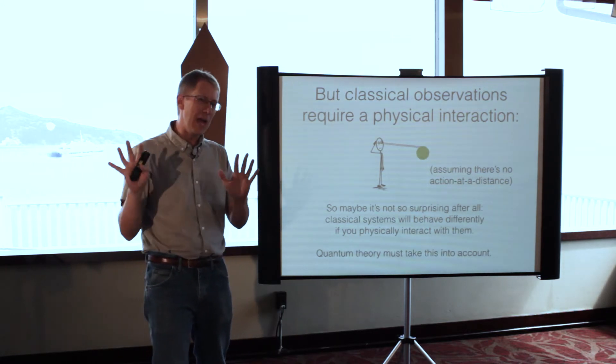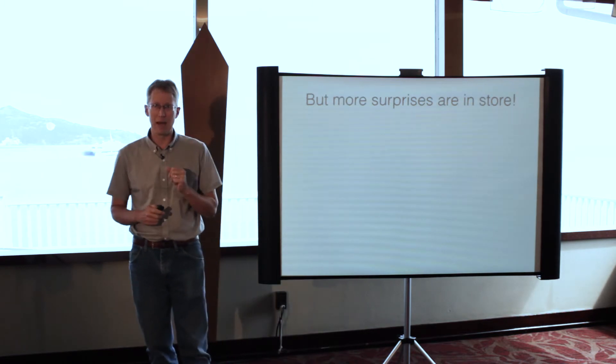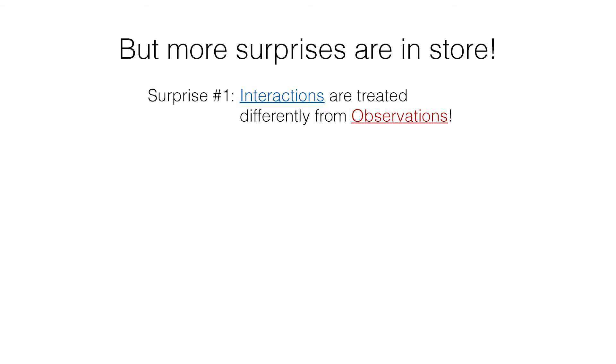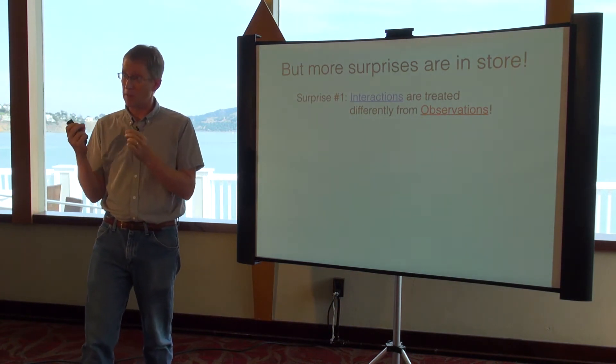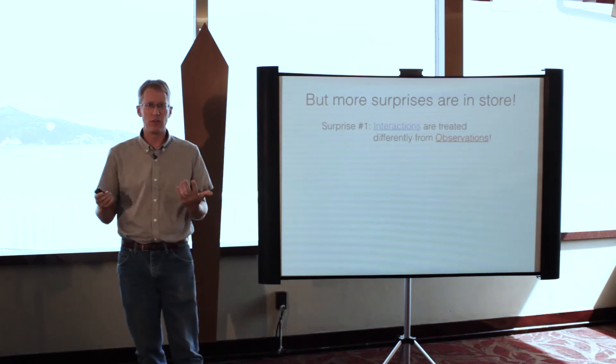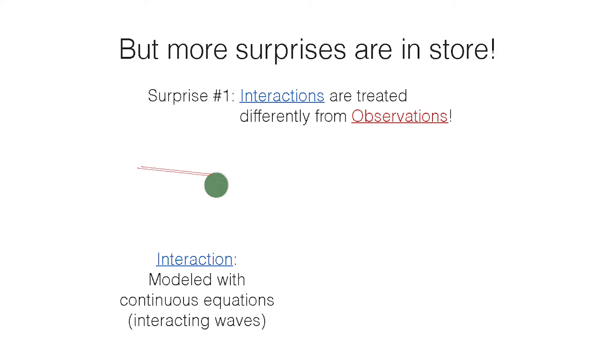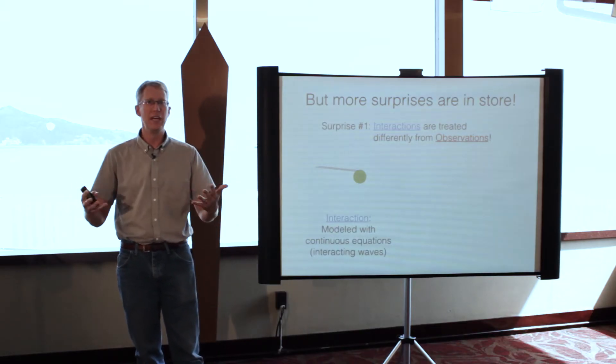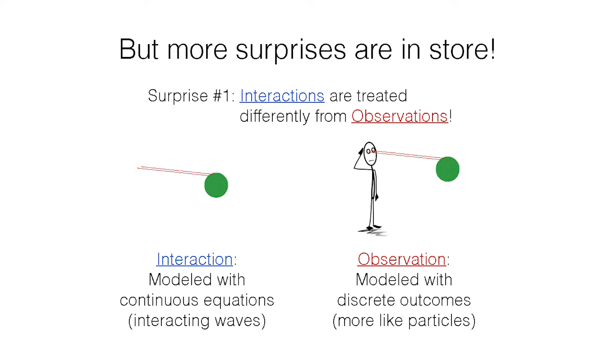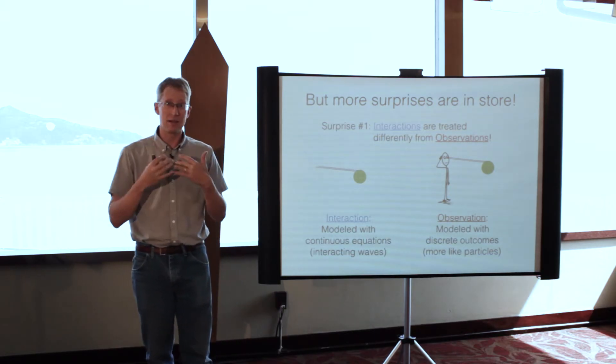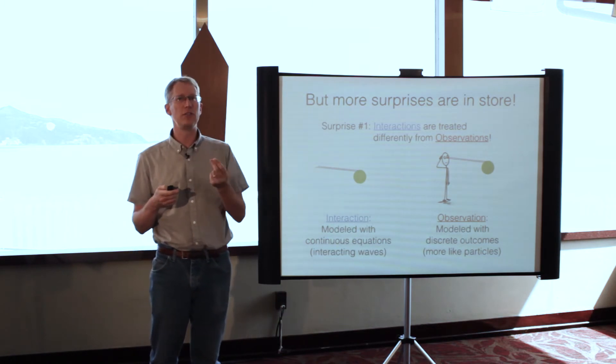Surprise number one is that in quantum theory, interactions are different from observations. That's kind of strange because I just said the important thing about observation is that there's an interaction. If you just have light bouncing off a particle, quantum theory sees that as interaction and models it with continuous interacting waves. But as soon as an observer is in the frame, it's no longer modeled the same way. There are different steps in the quantum formalism and you get discrete outcomes.